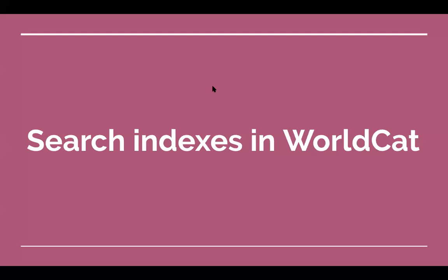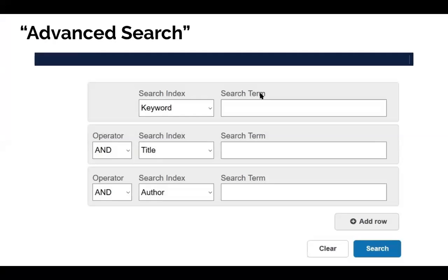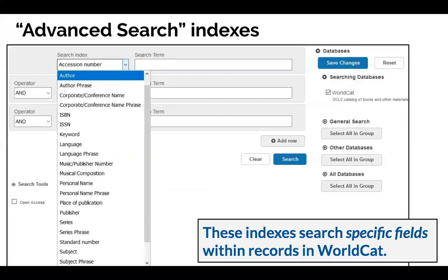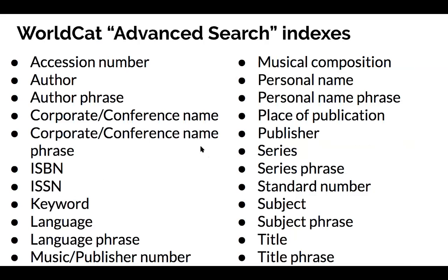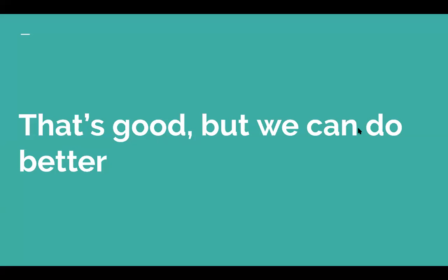Thank you, Tiffany. Now we're going to look at some search indexes in WorldCat, and as we move forward, we'll bring in some of the operators Tiffany has talked about as well. We're all familiar with the advanced search screen for the main catalog. When you drop down from those boxes, you can search through specific indexes — those indexes search specific fields within MARC records in WorldCat. Catalogers enter metadata in fields that correspond through MARC fields to these different indexes. You can pick from a whole list: author, ISBN, keyword, and lots more.